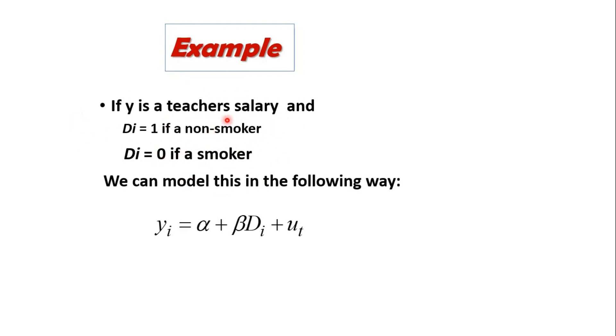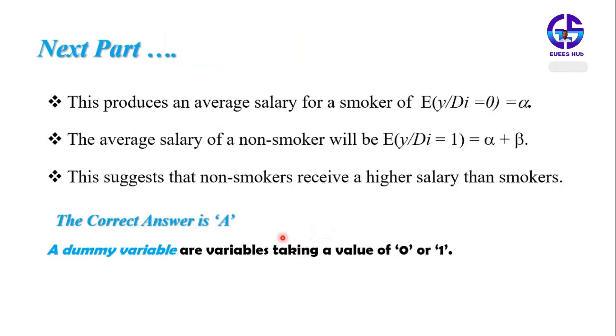We can model this in the following way: yi equals alpha plus beta Di plus ui. This is the constant term. When Di equals zero, the salary equals alpha, which is the base salary. But when Di equals 1, then the salary equals alpha plus beta.